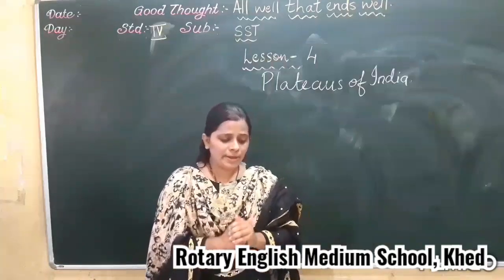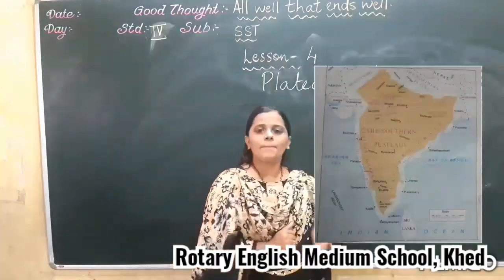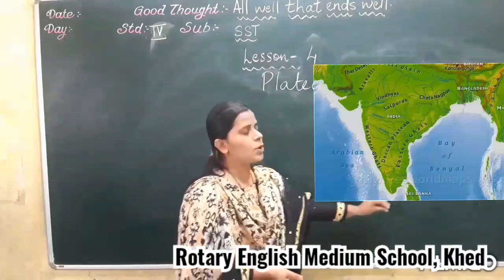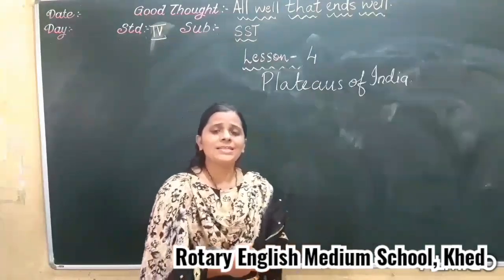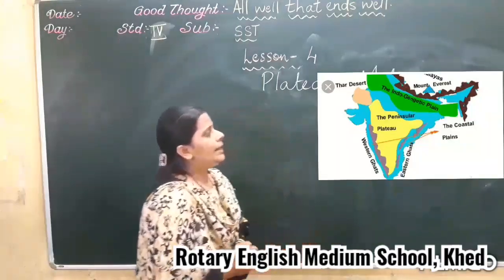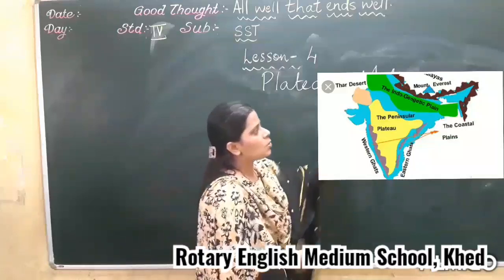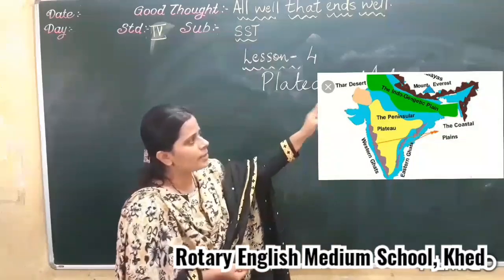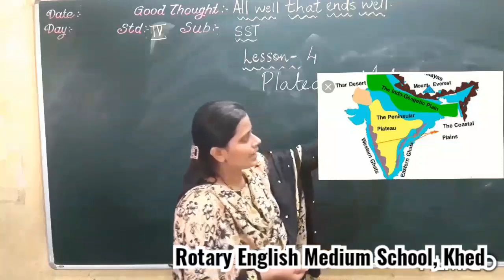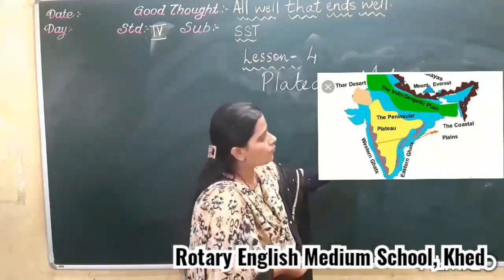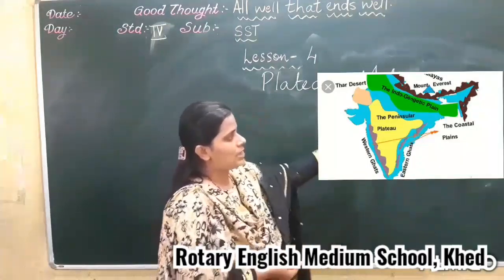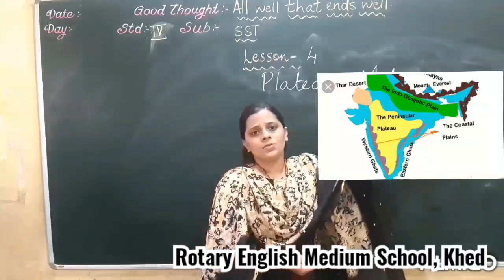Now, Indian peninsular — here we will discuss about the peninsular plateau. It covers a large part of the country. The peninsular plateau is located to the south of the northern plain. You can see on the map — to the south of the northern plain, the whole large area of the country is covered with the peninsular plateau.